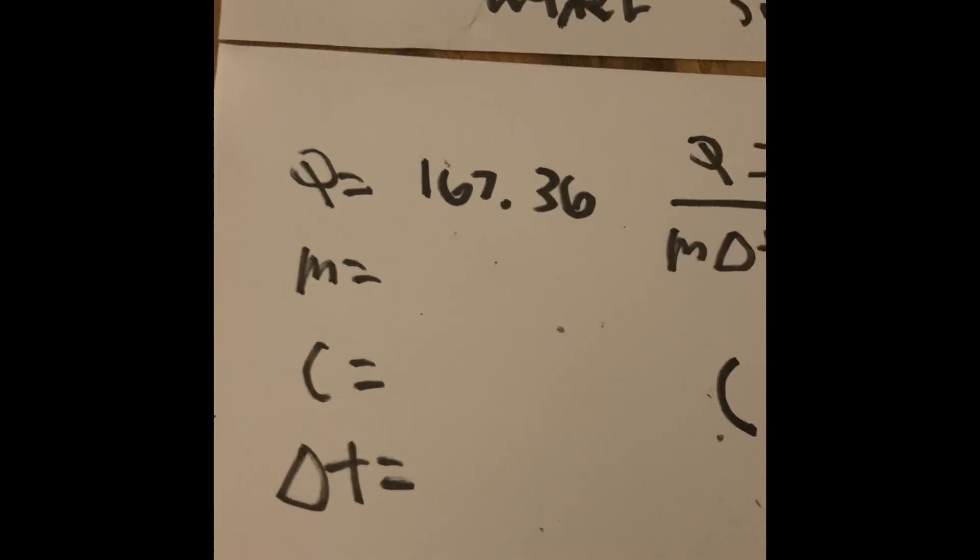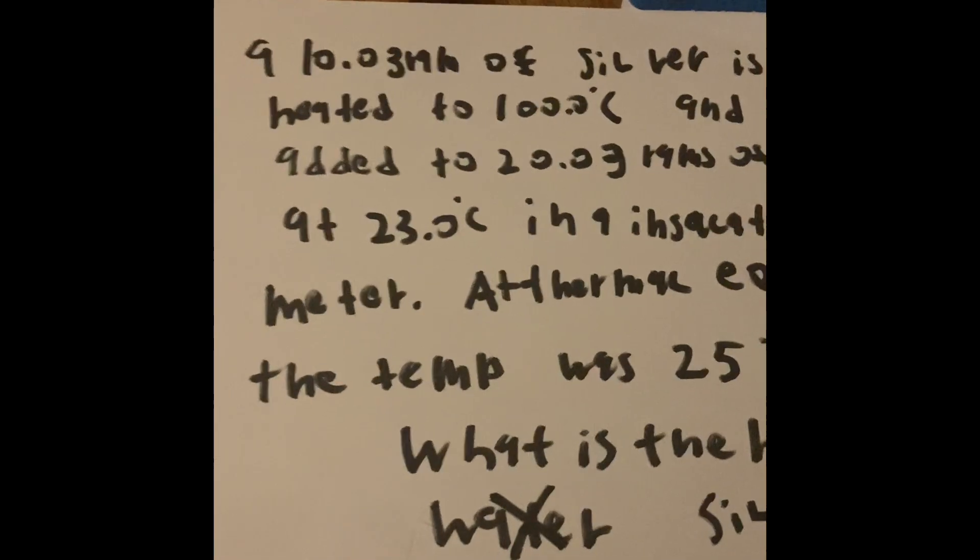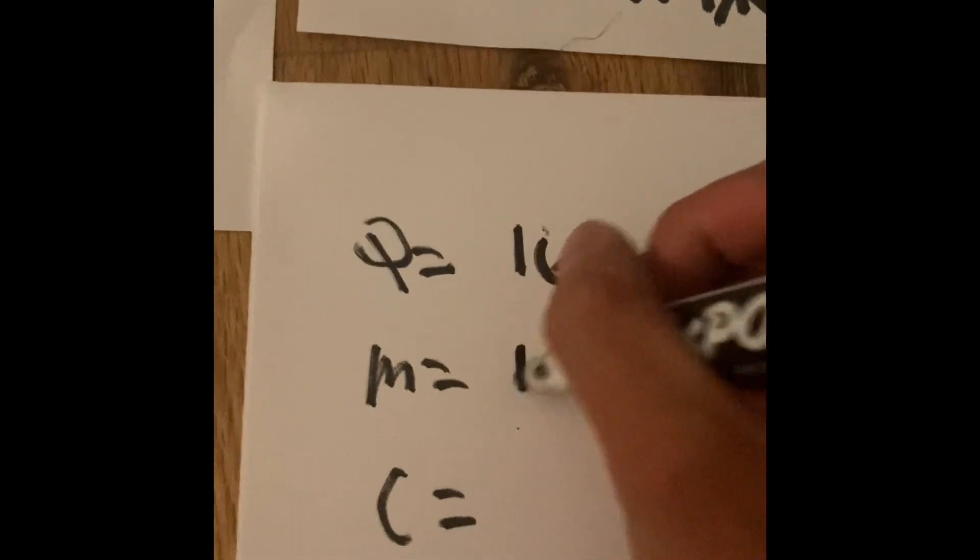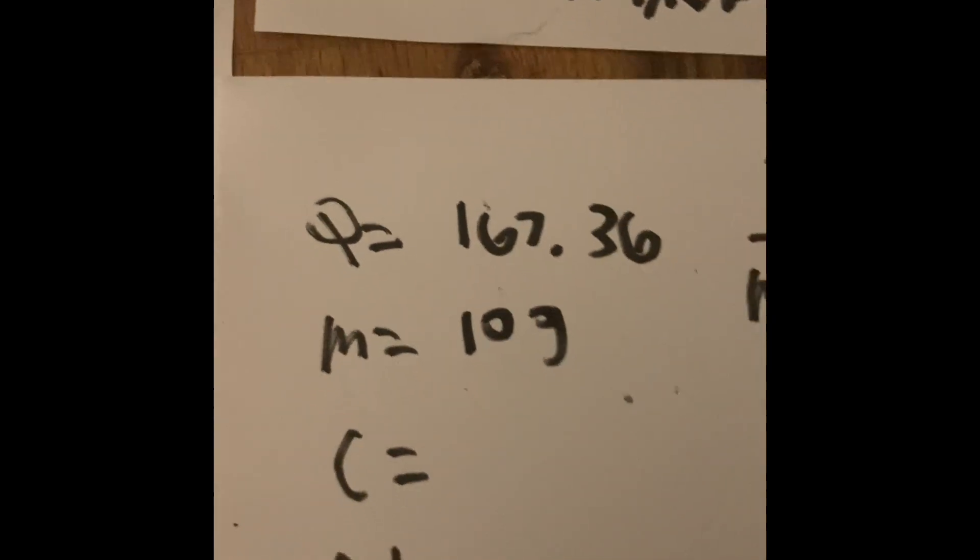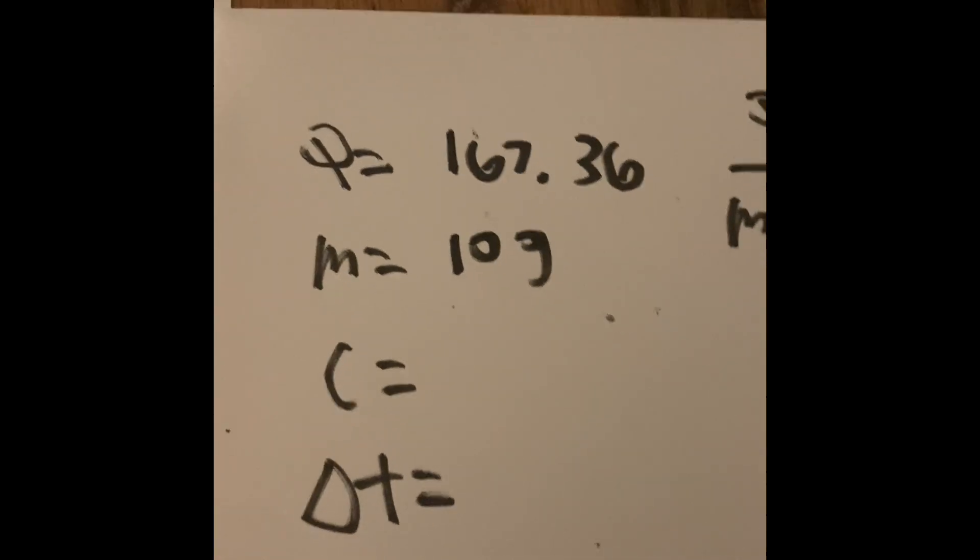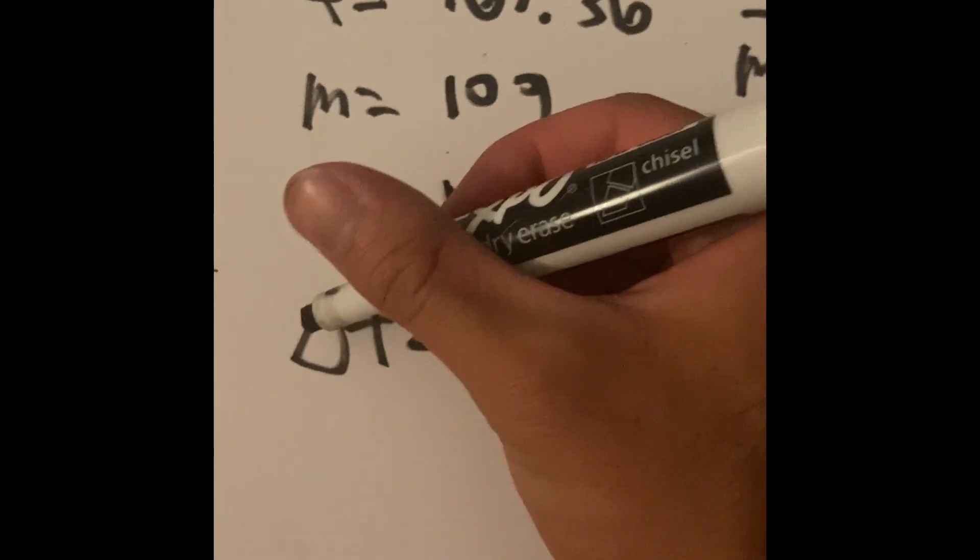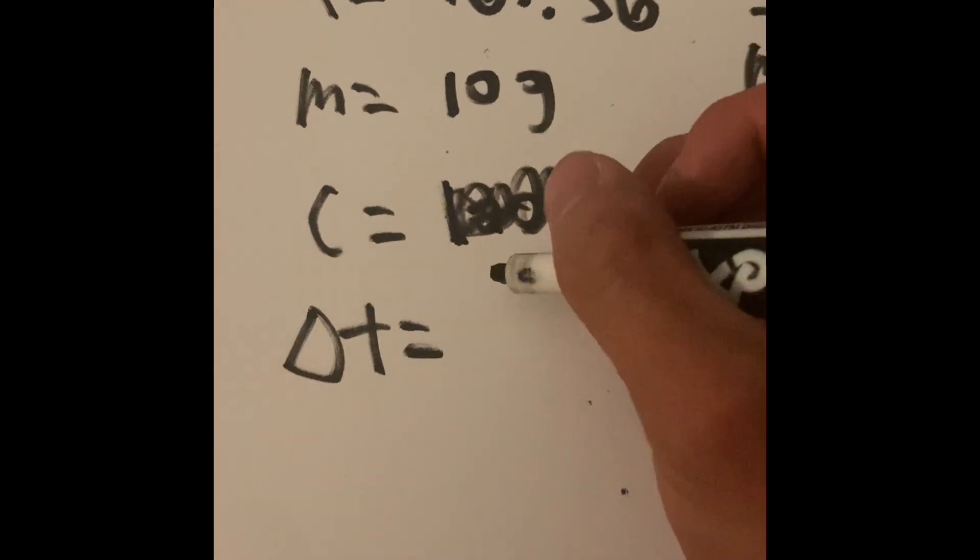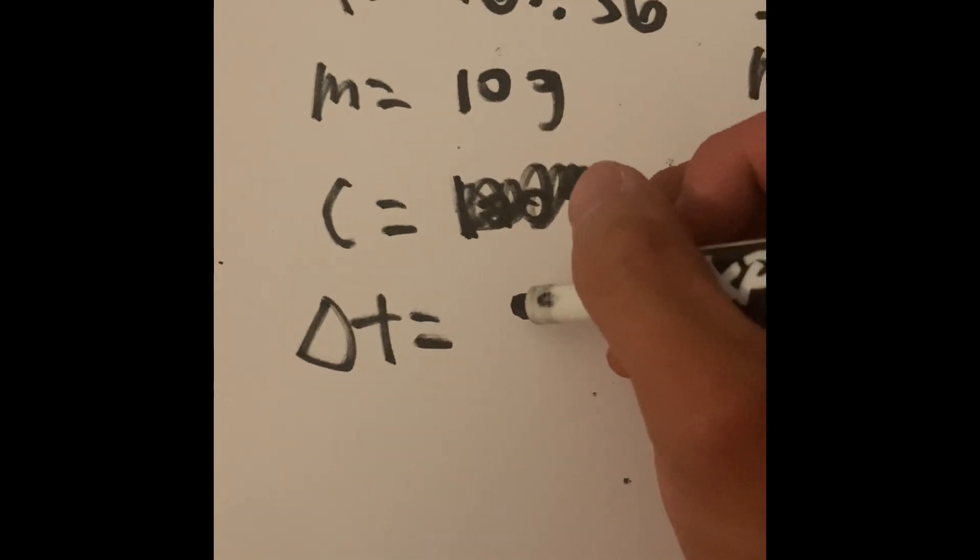We said the mass of the cube was 10 grams, so we're going to put that right here. And also, the change in Celsius, we're going to put 100 degrees Celsius.